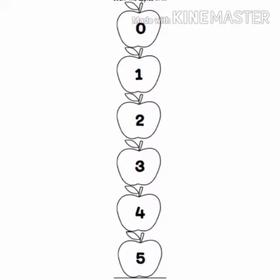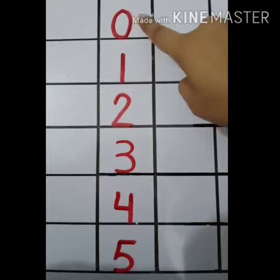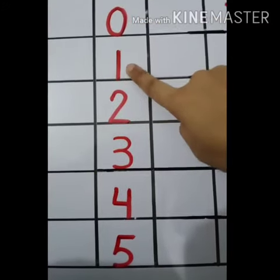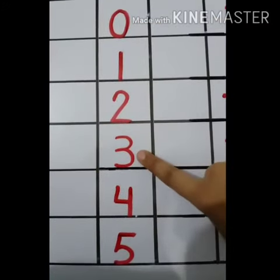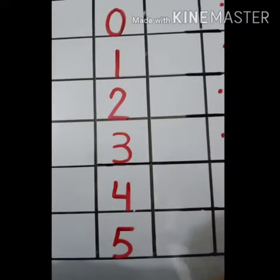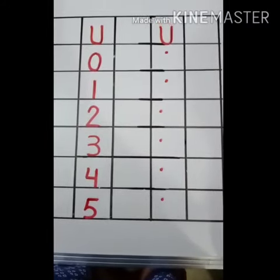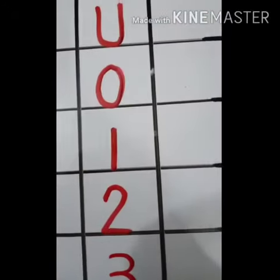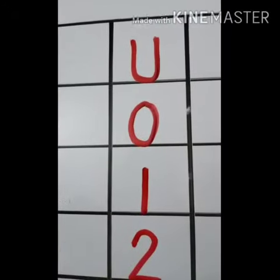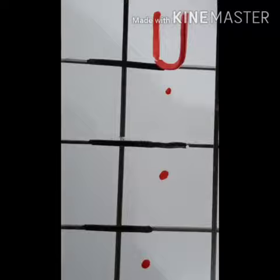Today we will learn and write counting zero to five. Pahle hum read kareenge. Let's start: zero, one, two, three, four, five. Next, main aapko iski formation write karna sikhaun gi.